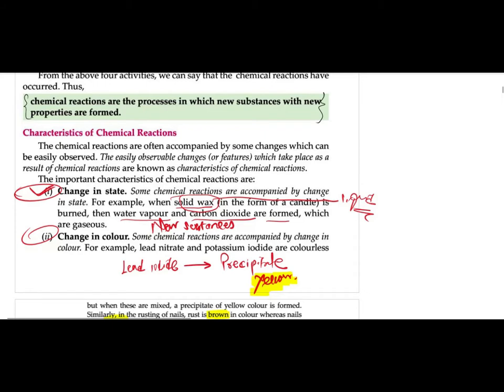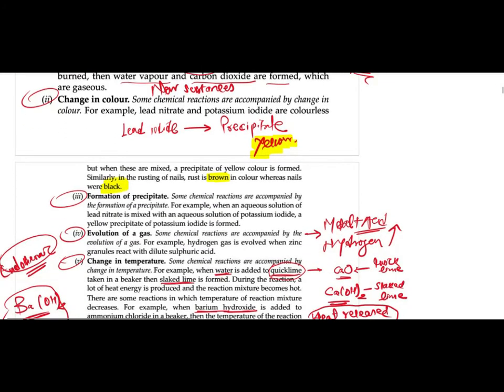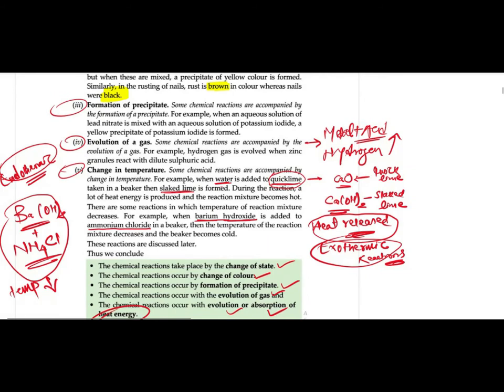After understanding what a chemical reaction is, we studied that it always takes place with certain characteristics. The first characteristic was change in state, in the case of a burning candle, which is a chemical change. Second, change in color, in the case of lead iodide. Third, formation of precipitate — also lead iodide.